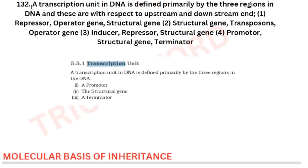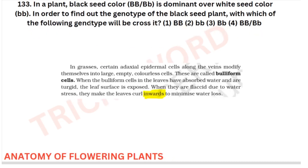A transcription unit in DNA is defined primarily by three regions in the DNA with respect to the upstream and downstream end. The three parts of the transcription unit are: a promoter, a structural gene, and a terminator. This is from your molecular basis of inheritance, and option four is the correct answer.